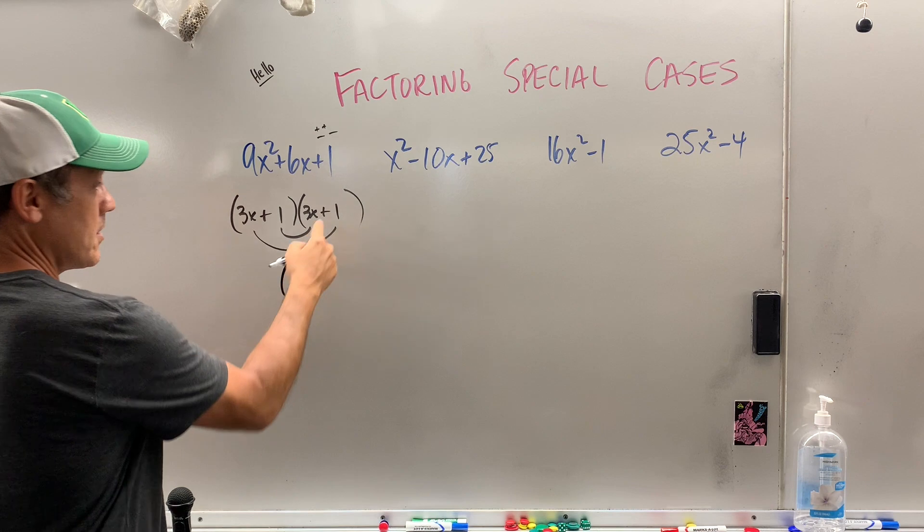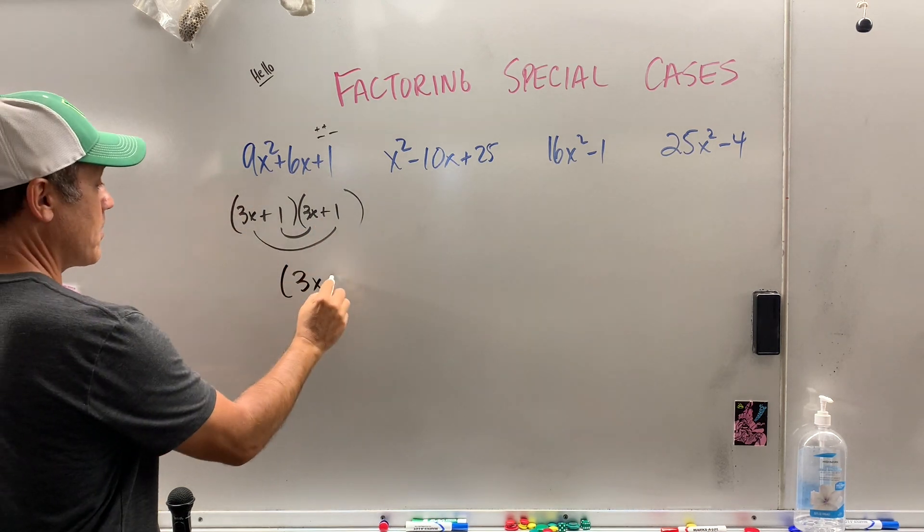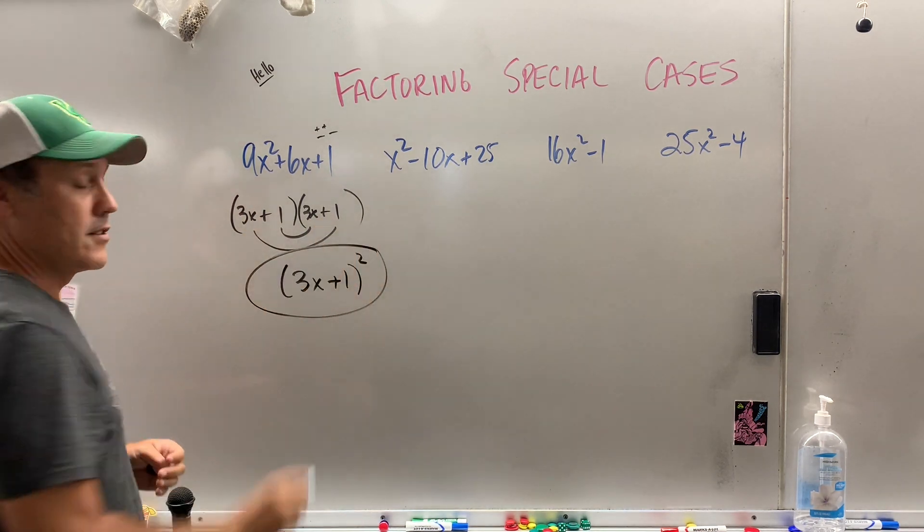The way the pros do it, this is perfectly fine. You can leave it like that. But let's group them and square it. And there's my answer.